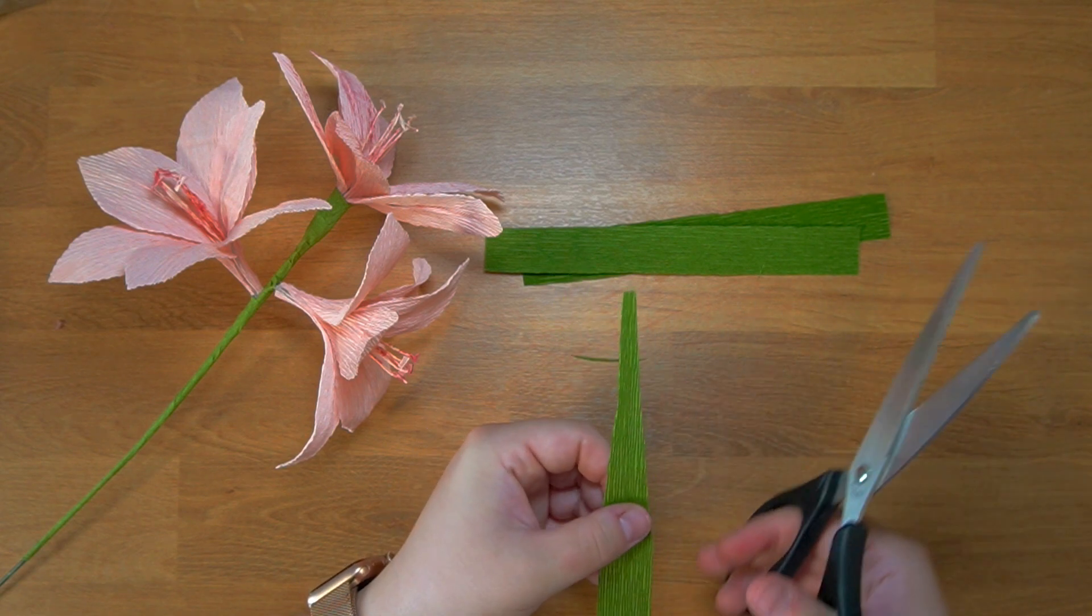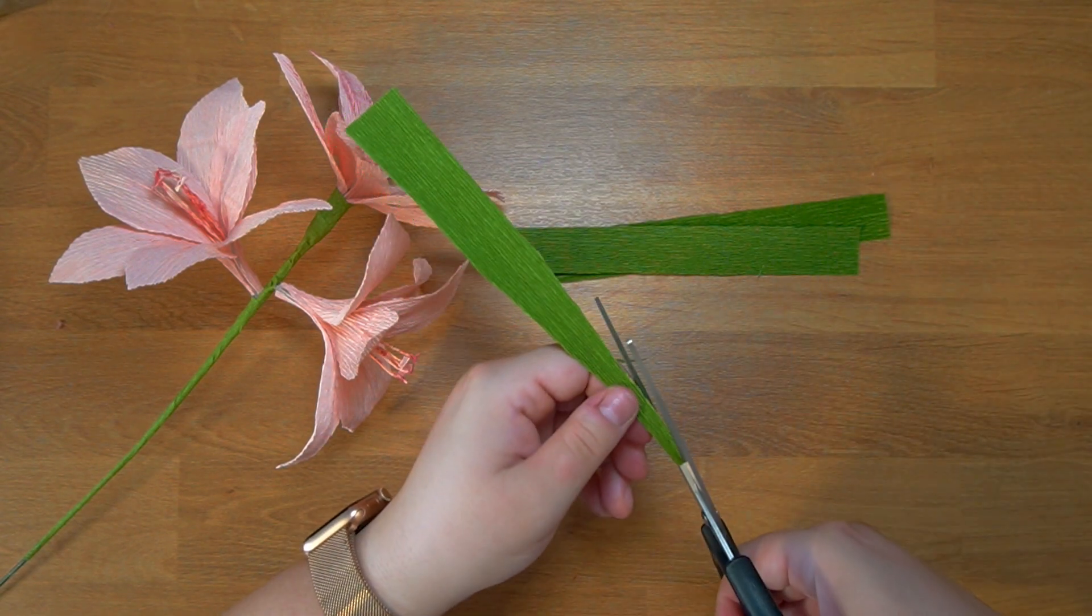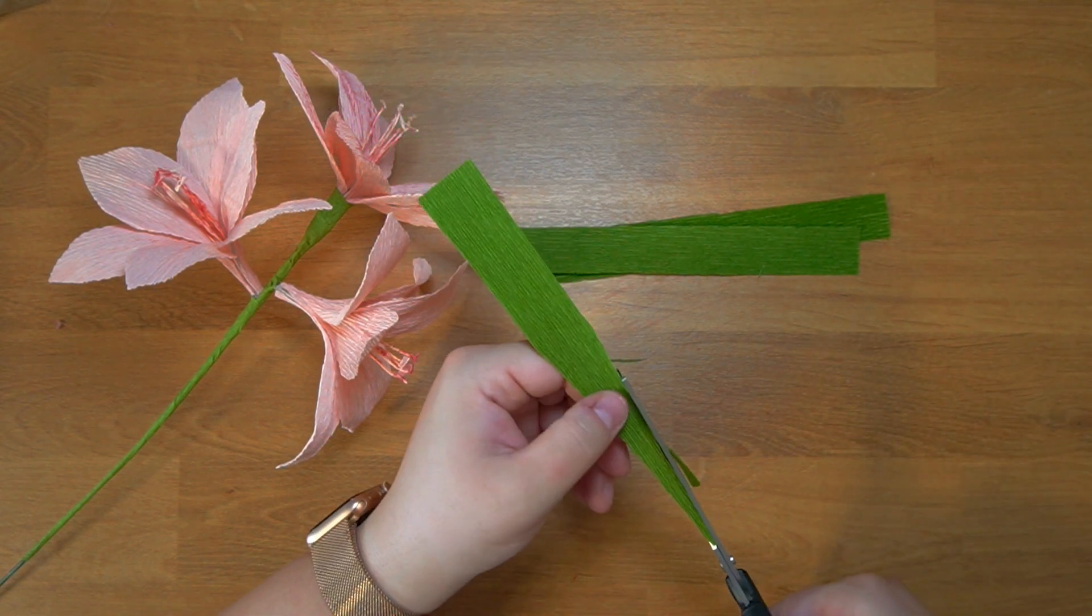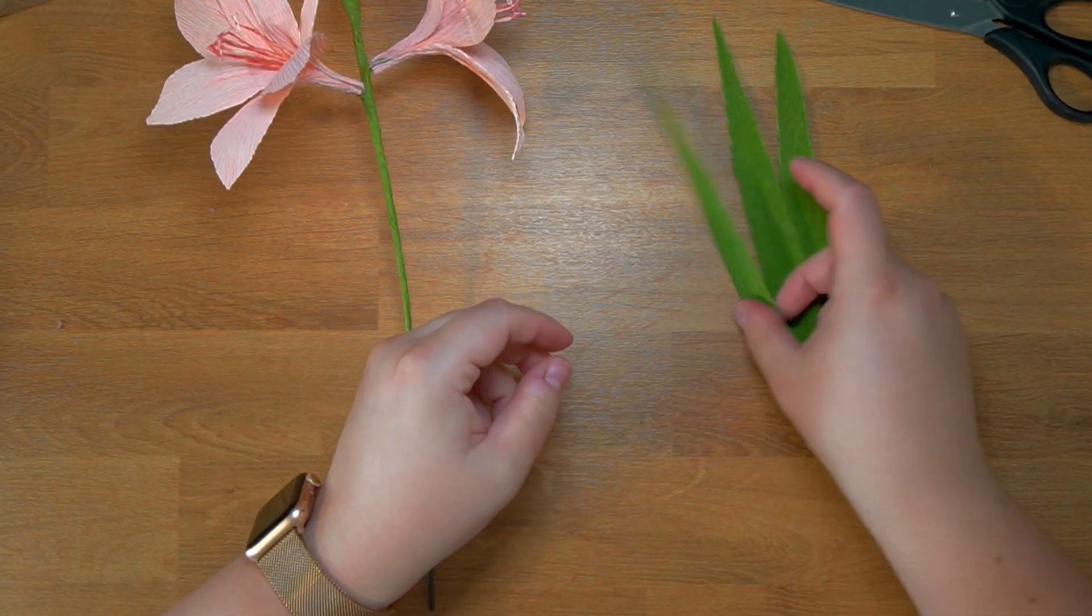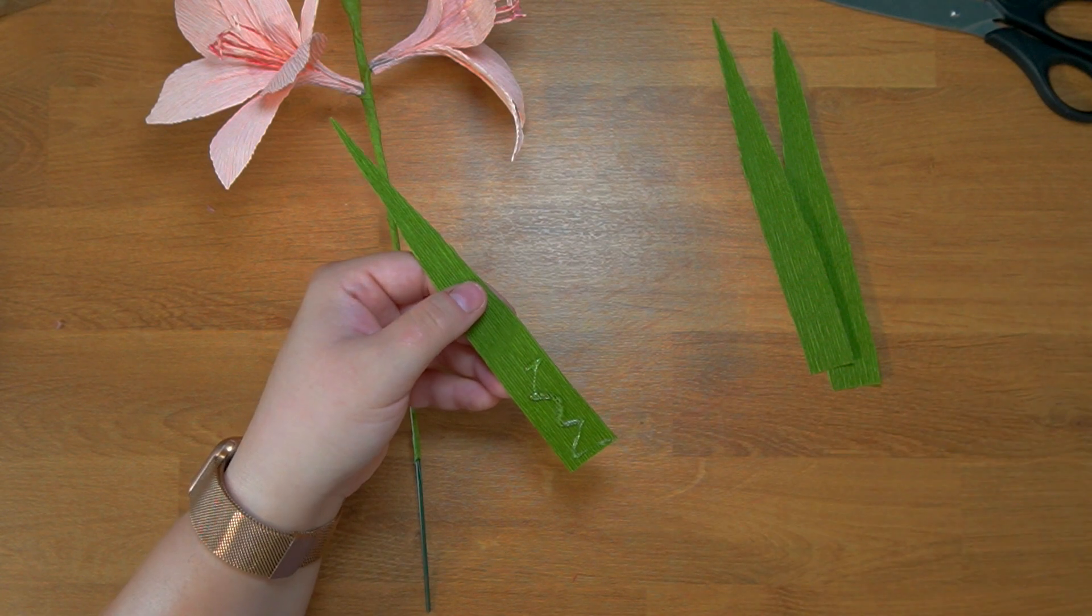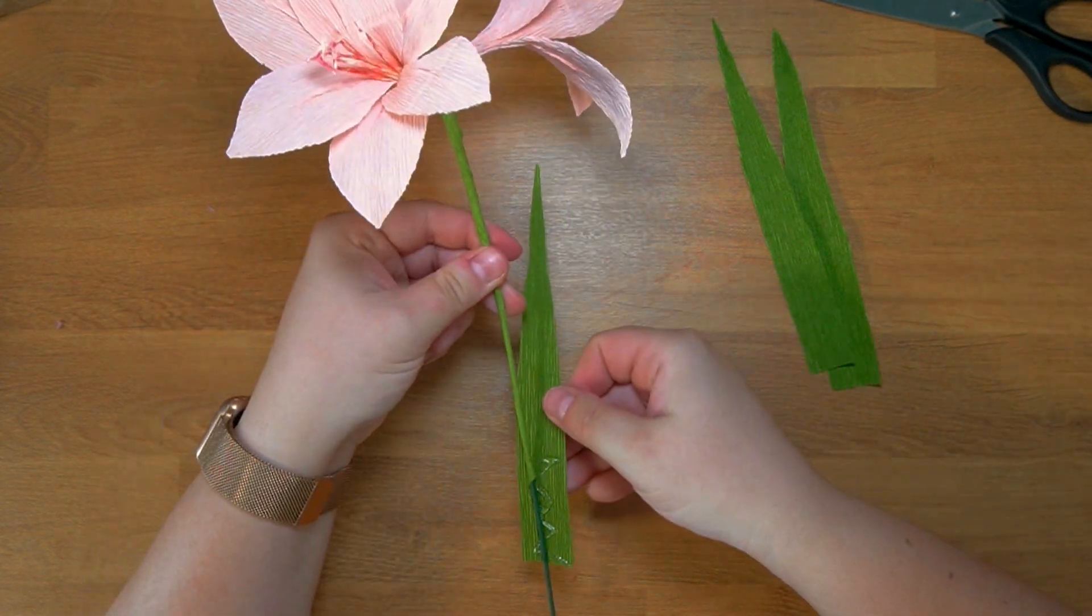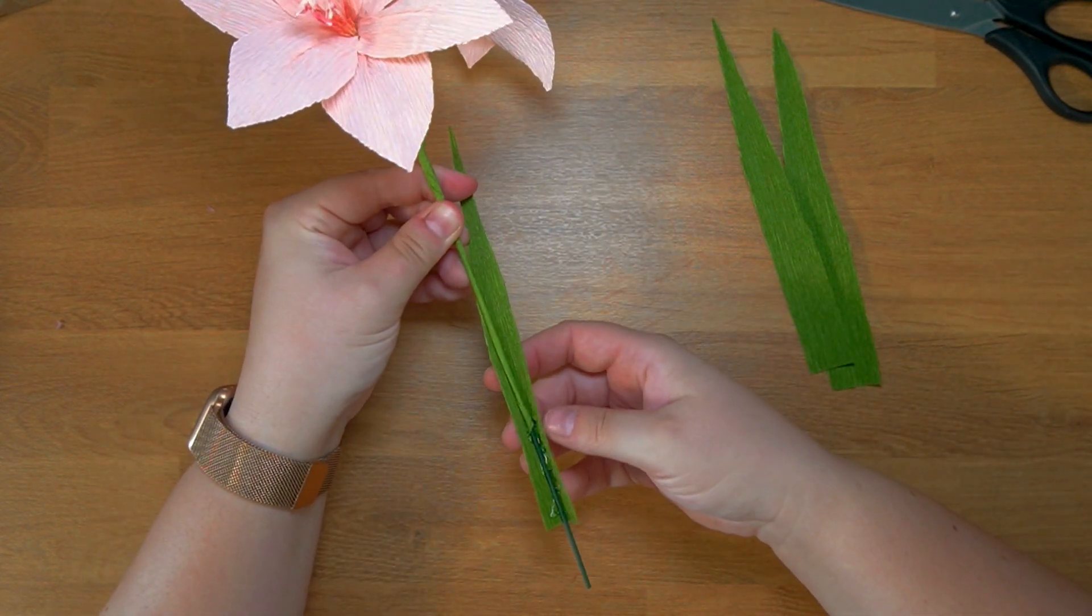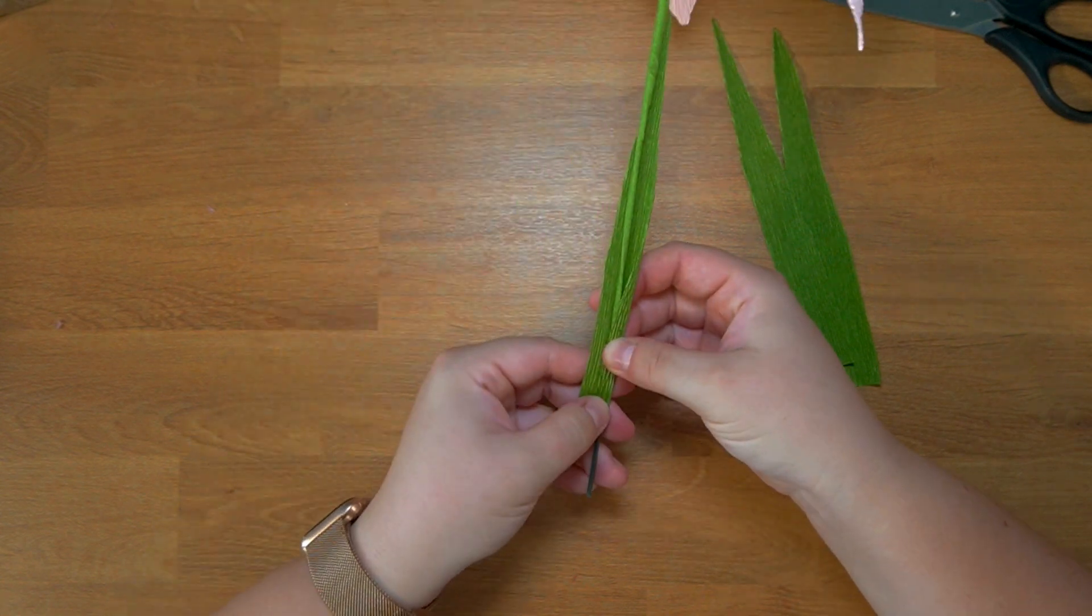All three leaves are going to look the same. They're going to be very pointy. And I'm not sure if this is scientifically correct, but I thought that three leaves would be the perfect number of leaves.